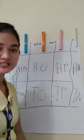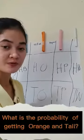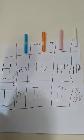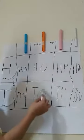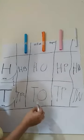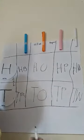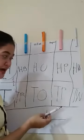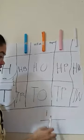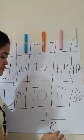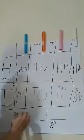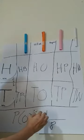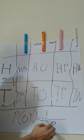Now for the next problem: what is the probability of getting orange and a tail? As we can see, orange and a tail — we have one occurrence here. Over how many possible outcomes do we have? We have eight possible outcomes. So the probability of getting orange and a tail is one over eight.